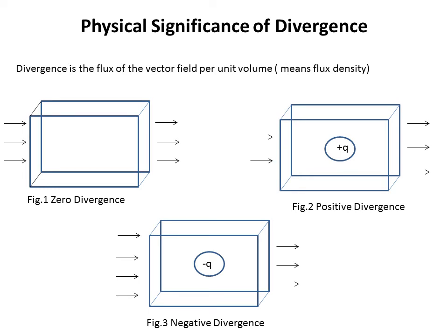Now let's look at the physical meaning of divergence. Divergence is the flux of a vector field per unit volume, meaning flux density. In figure 1, there is no charge inside the cube. The number of entering field lines equals the number of leaving lines, so we have zero divergence. In figure 2, we place a positive charge inside the cube. The number of entering lines is smaller than the number of leaving lines, so the divergence is positive.